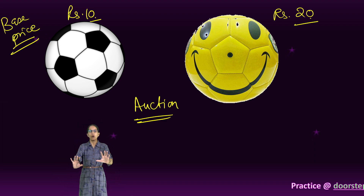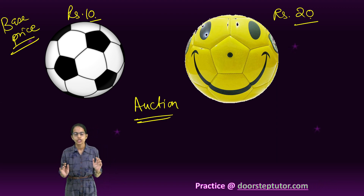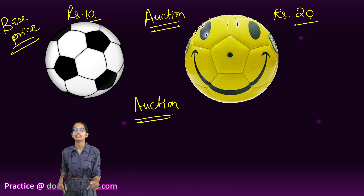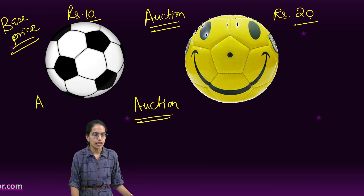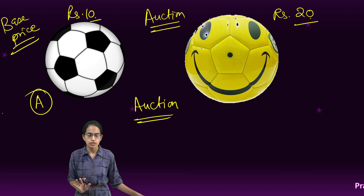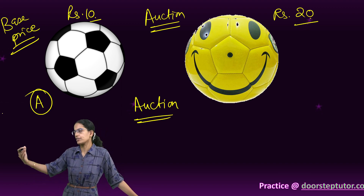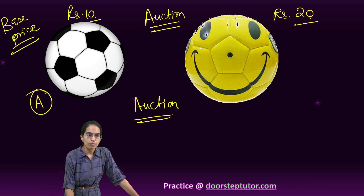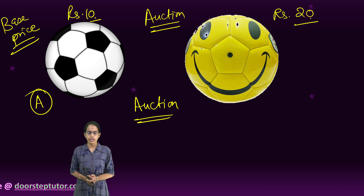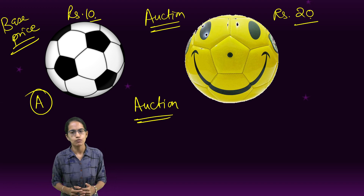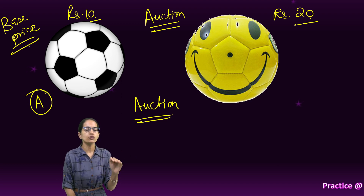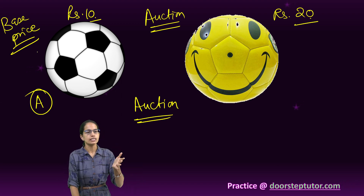I bring this ball for auction. There would be various people interested in buying this ball. But ball A is a common ball — you can get it everywhere in the market. So no one would bid aggressively. Person 1 says I want to purchase it for 10, person 2 also says 10, person 3 also says 10. So this ball would be sold at the base price of 10 rupees.